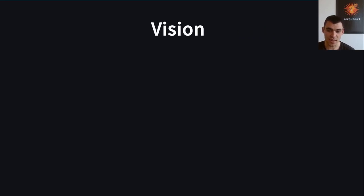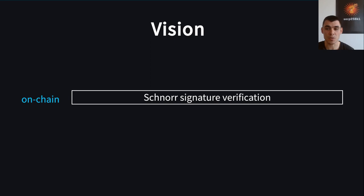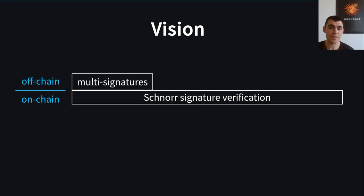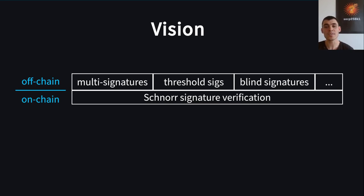The vision is to have a layered design. On the on-chain layer we'll just have support for Schnorr signature verification — nodes in the Bitcoin network will be able to verify ordinary Schnorr signatures as part of the consensus rules. This simple functionality enables us to deploy advanced signing protocols in an off-chain manner without the need to change the consensus code every time. For example, we can build multi-signatures on top, but we can also build threshold signatures, blind signatures, and possibly other advanced signing protocols. As long as the output looks like an ordinary Schnorr signature, it will be understood by the nodes on the network.